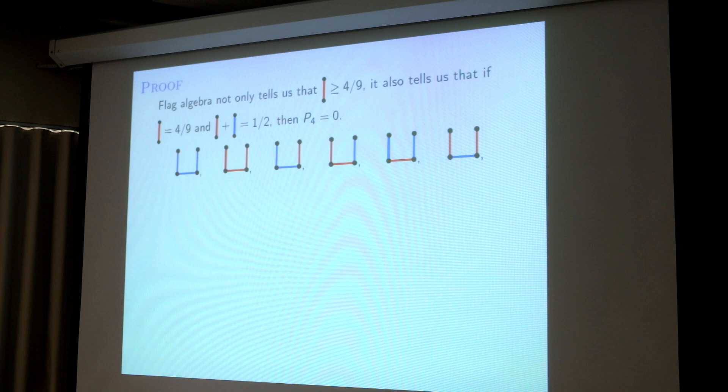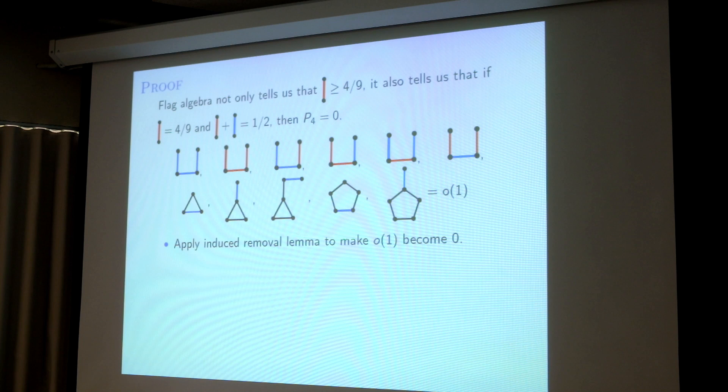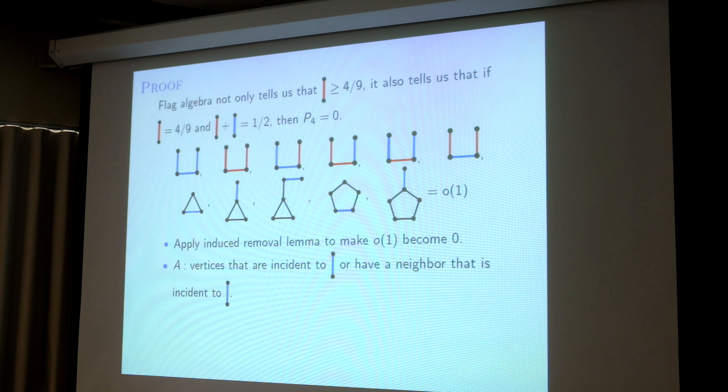So instead of just showing the inequality at zero, it also tells me that if these two conditions hold then I cannot see these structures. I use this additional information to get the stability result. Basically I also have certain other structures being zero because they are blow-ups of C7 from the previous slide. So you can see I have a lot of information about the extremal structure.